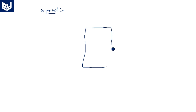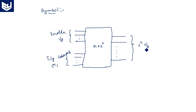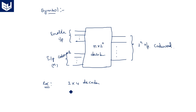The decoder symbol has enable input pins, an input code word of size n, and 2^n output lines (output code words). Examples include 2-to-4, 3-to-8, and 4-to-16 decoders.